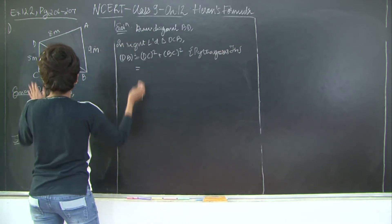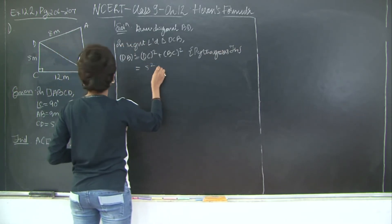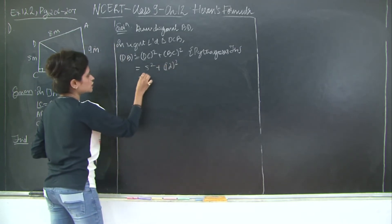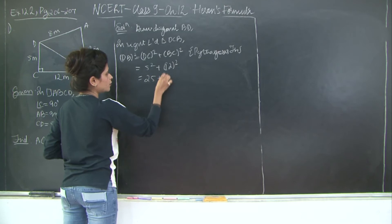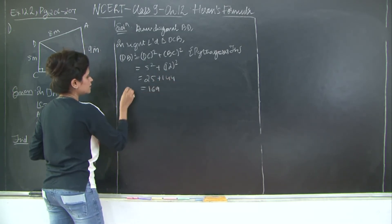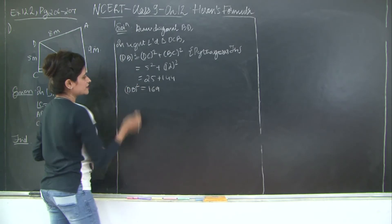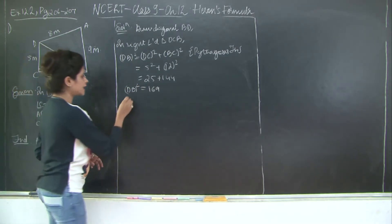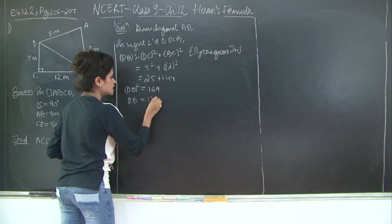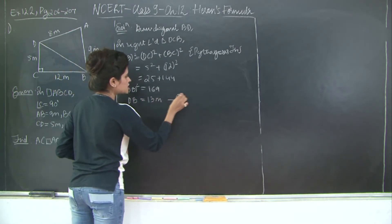So DC is given to be how much? 5 meters. So 5² and BC is 12, so 12². So this would be 25 + 144 which would be 169, DB². So obviously DB would be √169. We know that the square root of 169 is 13. So DB is 13 meters. I will mark this as 1.